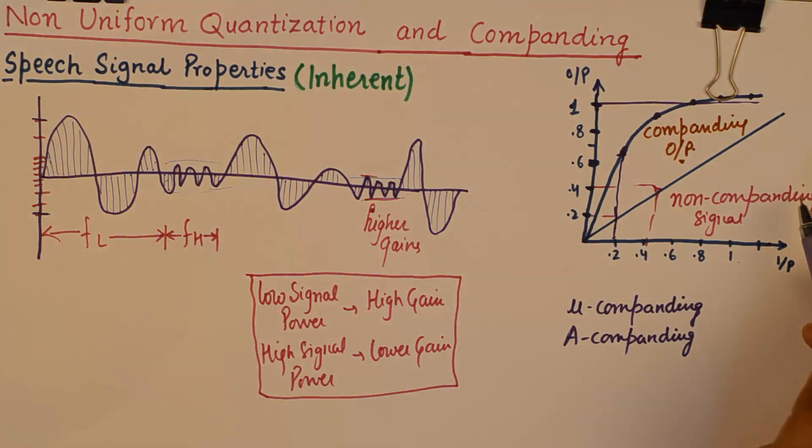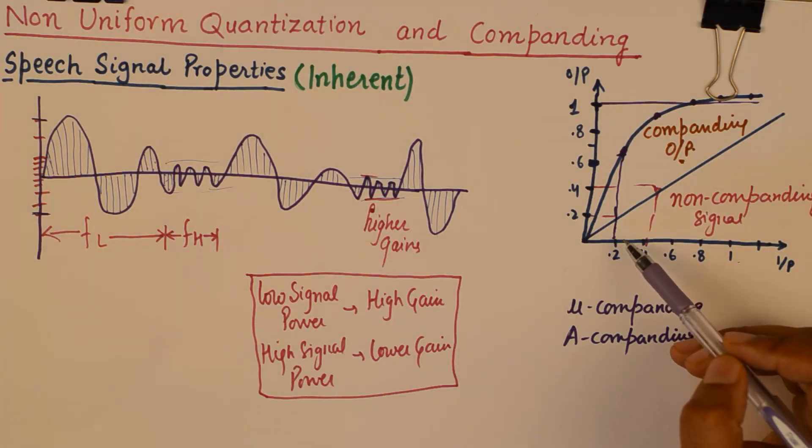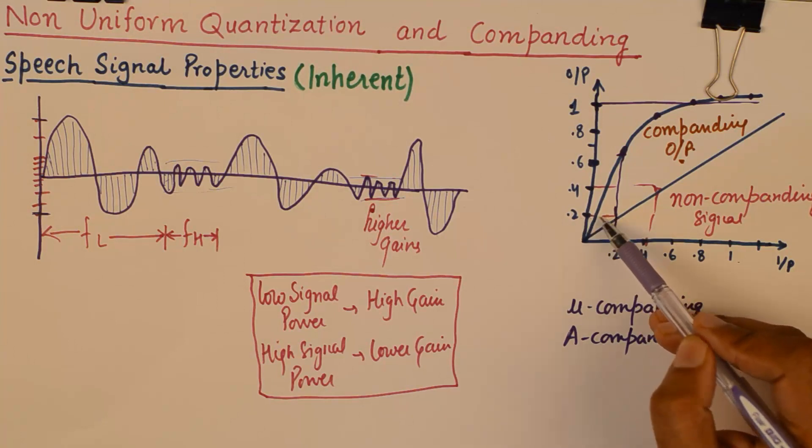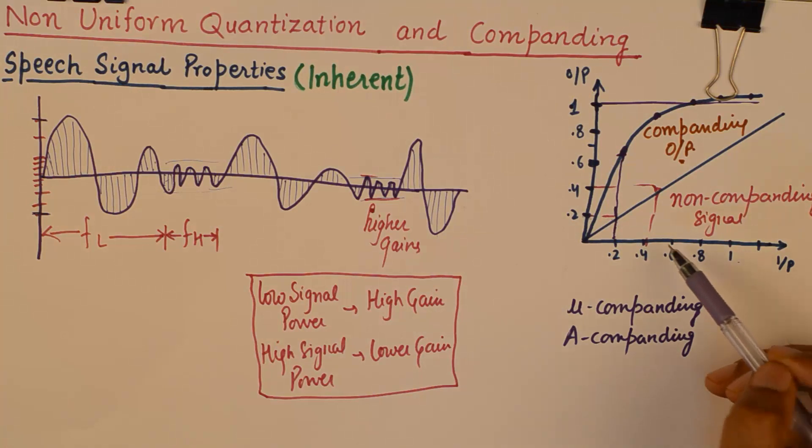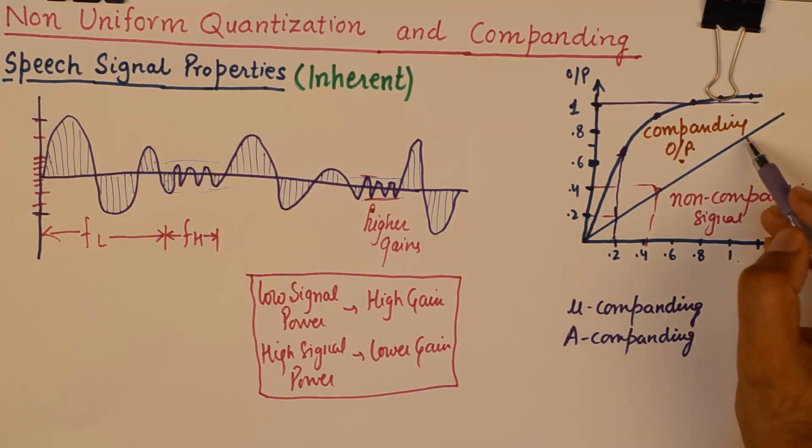However, if you look at a non-companding signal, if compander was not there in the system, then the output of the low power signal will also be small. What we give at the input would be obtained at the output. If no compander is used and the signal to noise ratio will remain skewed, it will remain uneven for the entire spectrum. As you can see, the high power signals will have a higher value of output.